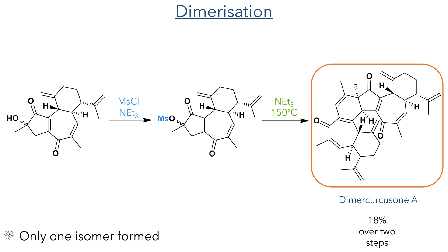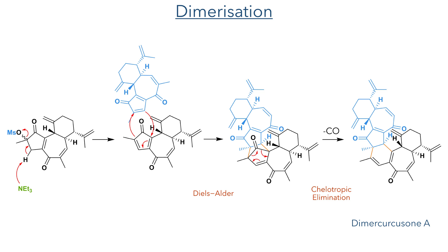With these in hand, the authors could then complete the final compound of the synthesis: Dimer Quercusone A. The alpha-hydroxyl group is first mesylated using mesyl chloride and triethylamine, and the resulting compound is then heated at 150°C with triethylamine, which promotes a dimerisation reaction to form Dimer Quercusone A in an 18% yield over two steps. Interestingly, this reaction only formed one isomer. Triethylamine first promotes elimination of the mesyl group forming a dienone, which undergoes a Diels-Alder reaction with another molecule of the dienone, forming the carbon-carbon bonds linking the two sides of the dimer. The resulting enone can then undergo cheletropic elimination with the loss of carbon dioxide to form Dimer Quercusone A as a single isomer, likely due to steric hindrance from the tricyclic ring system which only allows the dienophile to approach from one face of the molecule.